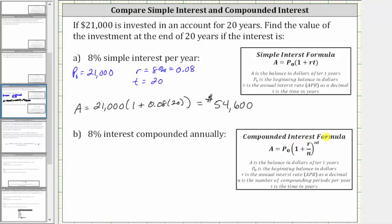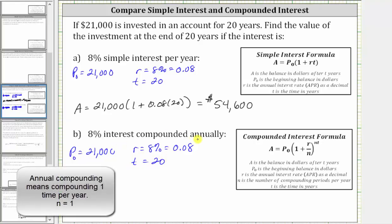For the compounded interest formula, P sub zero is still $21,000. The annual interest rate is still 8%, which as a decimal is 0.08. T, the time in years is still 20. But because we have compounded interest annually, N, the number of compounds per year is one.